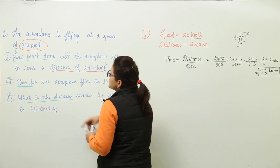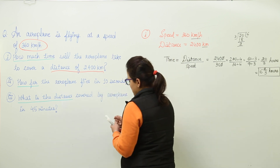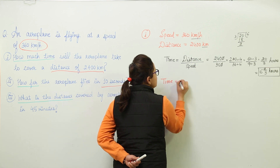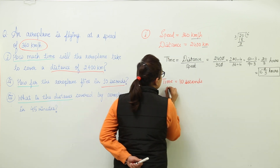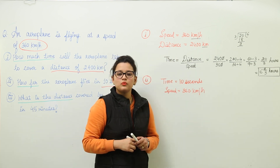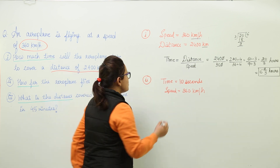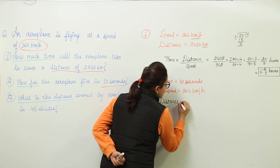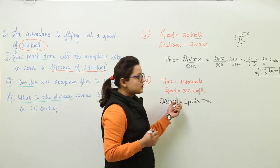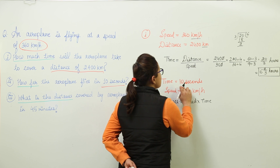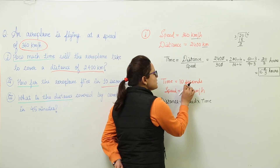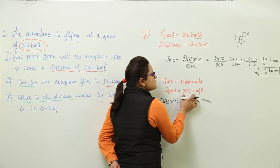The next part asks how far the aeroplane flies in 10 seconds. Here the time is given as 10 seconds, and the speed remains 360 kilometers per hour. We need to find the distance, so we use the formula: distance equals speed multiplied by time. We have both values, but the units don't match — time is in seconds while speed is in kilometers per hour.